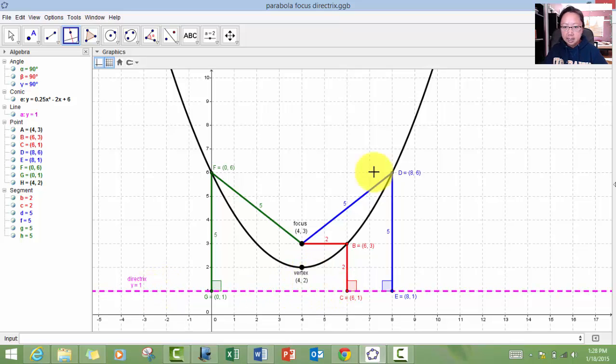The definition of a parabola is this: along this curve, any point that I pick, if I choose a point, for example, this point called 6, 3, point B, if I draw a line perpendicular down to the directrix, it'll meet at a point here.